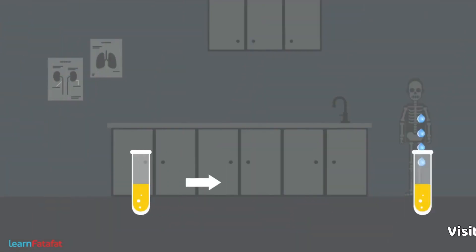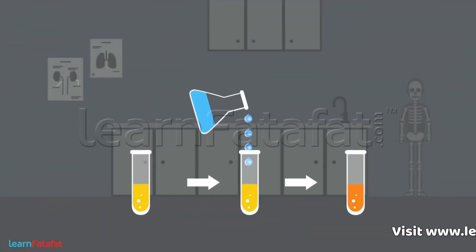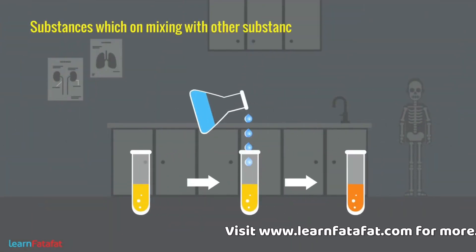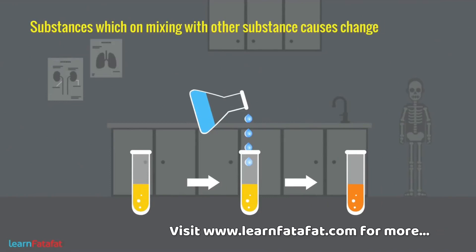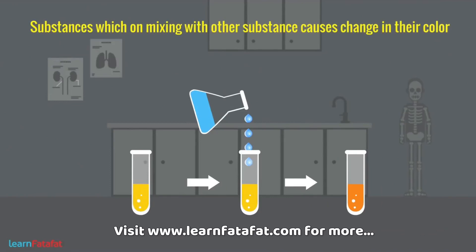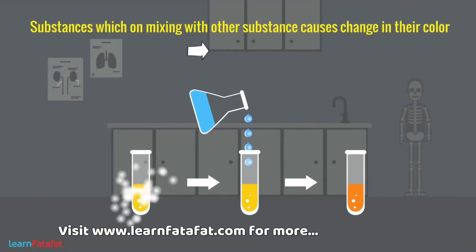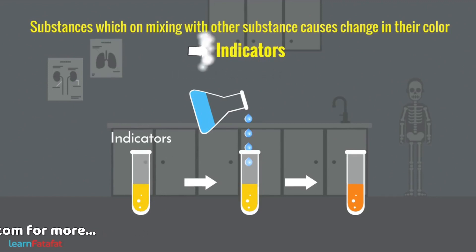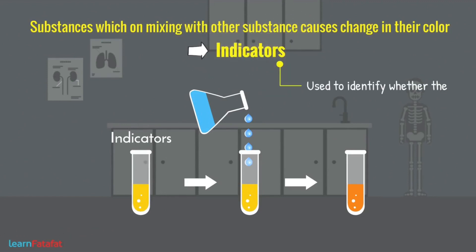But we have a solution. There are certain substances which, on mixing with other substances, cause a change in color. These are called indicators. These indicators are used to identify whether a substance is acidic or basic.